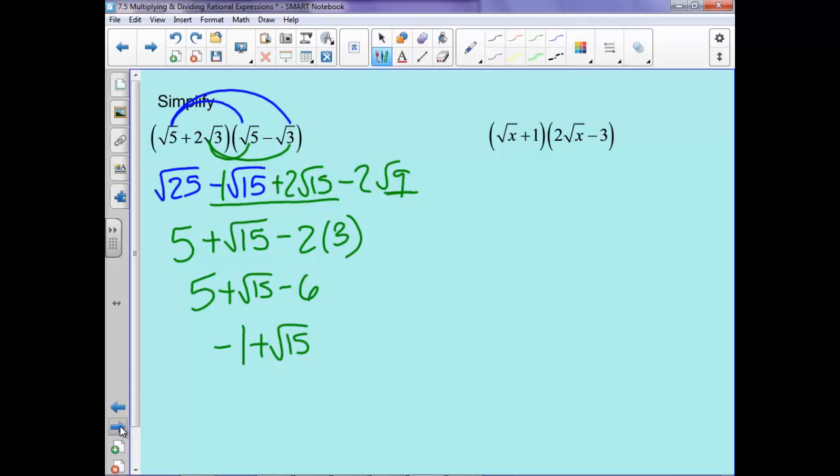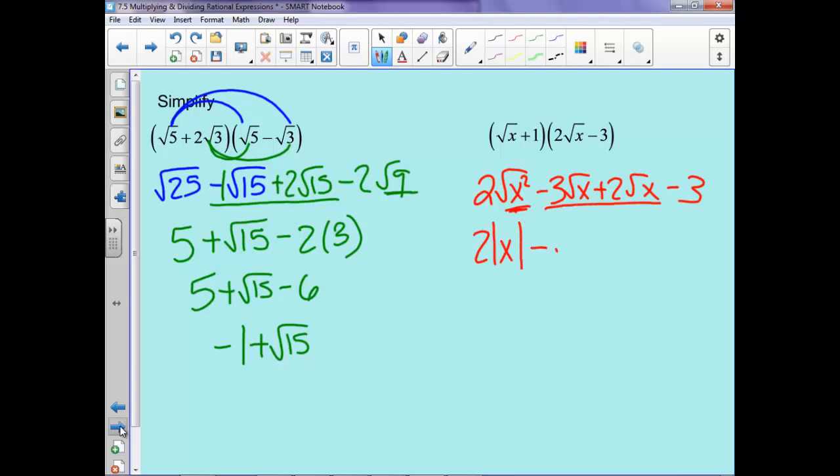Same idea over here. When we distribute, we'll have 2 root x squared minus 3 root x plus 2 root x minus 3. Notice square root of x squared is x, so absolute value of x. When we combine these two, we'll have minus root x minus 3.